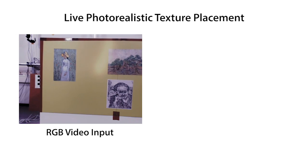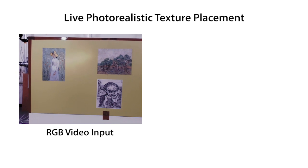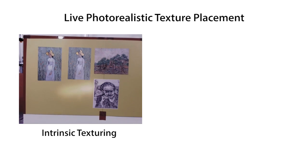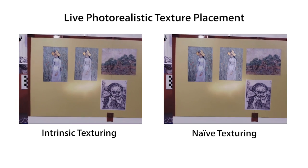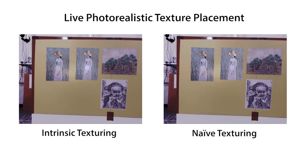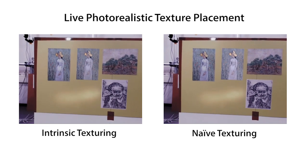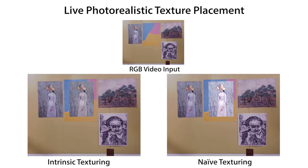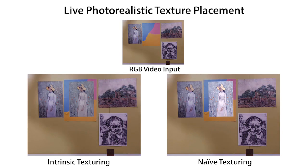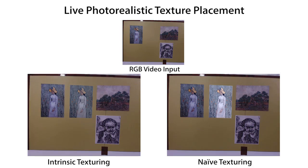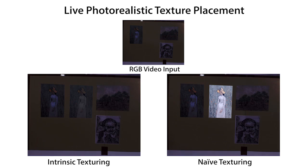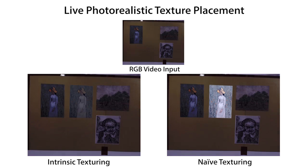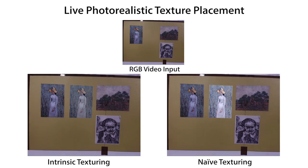For the first time, we introduce photorealistic retexturing in real-time. We texture a Van Gogh painting on the board and track it using a real-time sparse feature tracker. Observe that the naive texturing does not interact with the spotlight and shadows while our inserted texture looks photorealistic. We are also able to texture over existing textures. We test our texturing technique with global lighting effects by dimming the lights. While our texture interacts with the light realistically, the naive texturing does not adapt to the changing brightness.